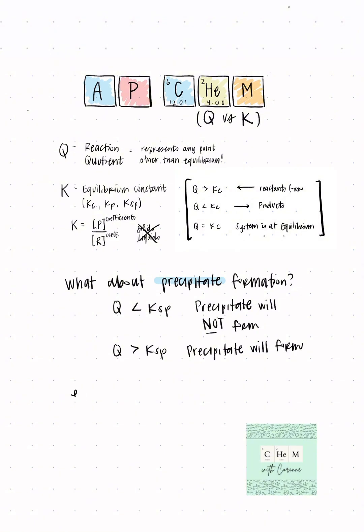But when Q is greater than Ksp, the precipitate will form. Why does it feel backwards? It's because in these precipitation reactions, the solid precipitate is your reactant. So we're still following the same comparison that we used above, where we are favoring the reactant side when Q is less than K, and we're favoring the product side when Q is greater than K. The difference is in these precipitation reactions, the precipitate is the reactant.